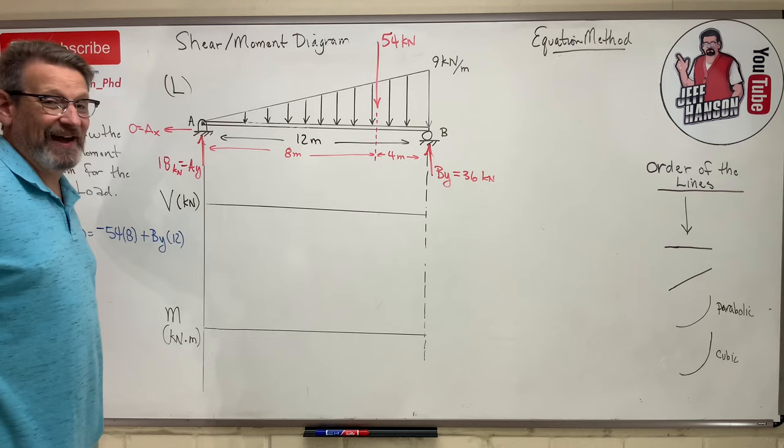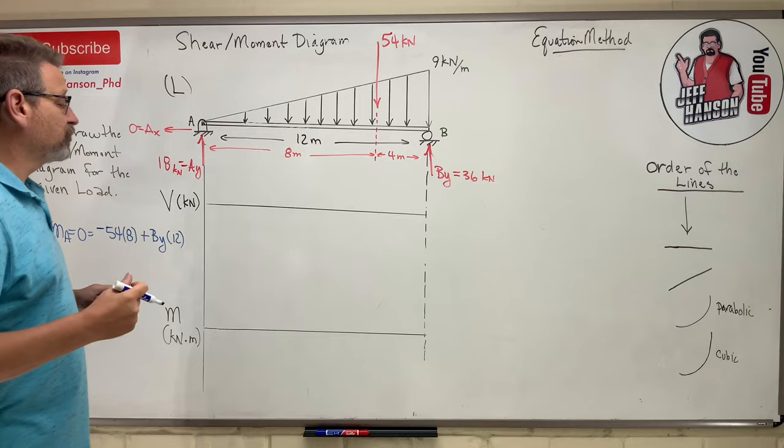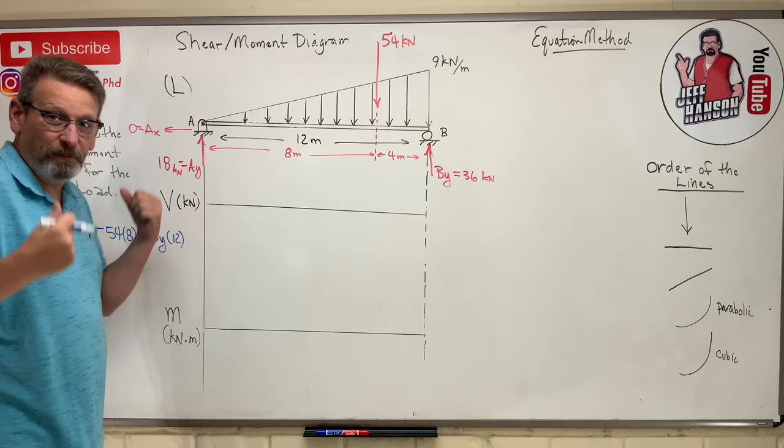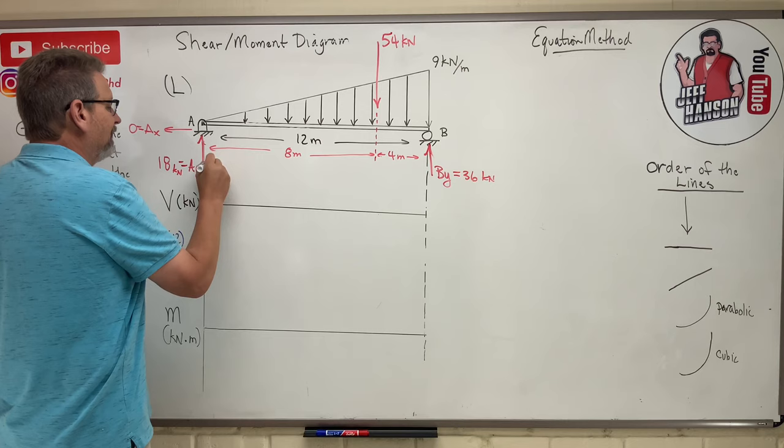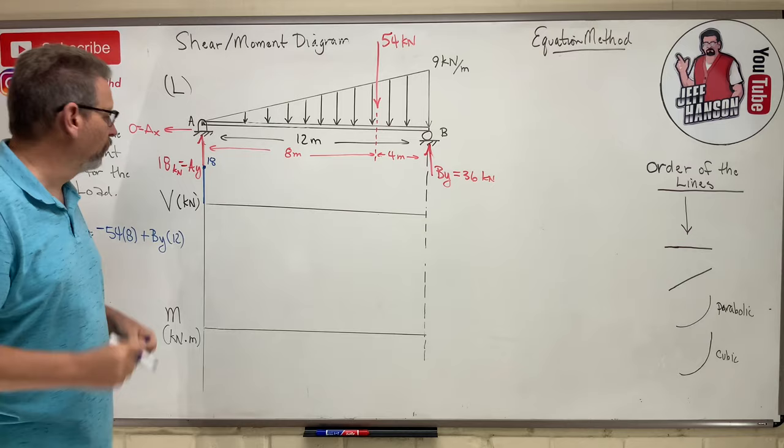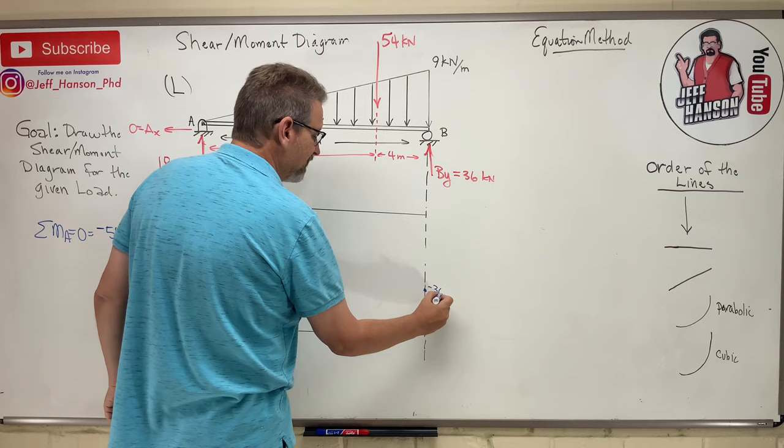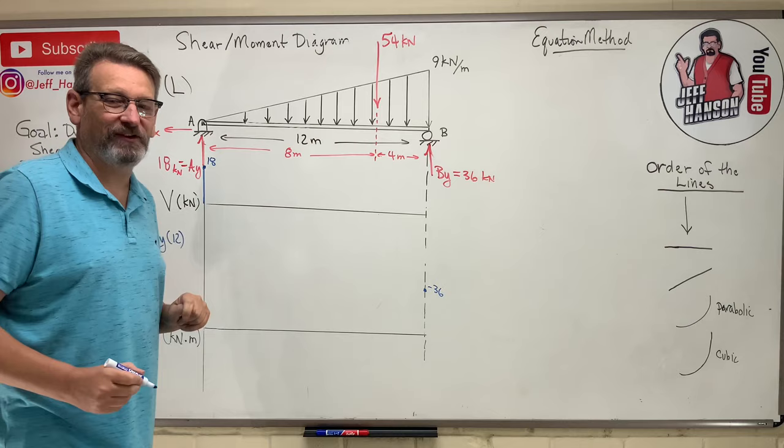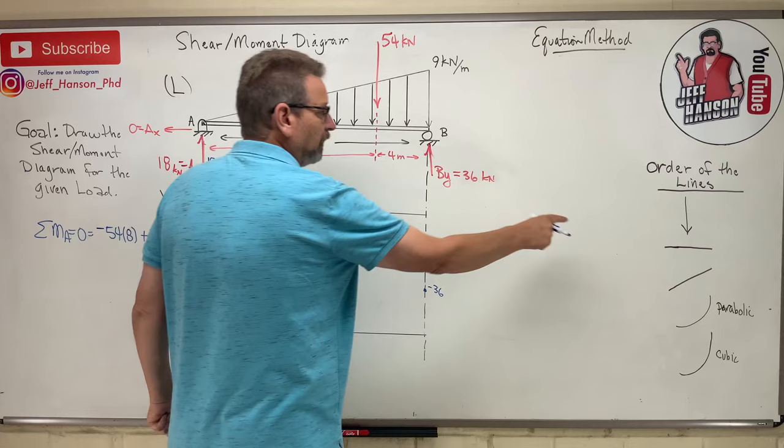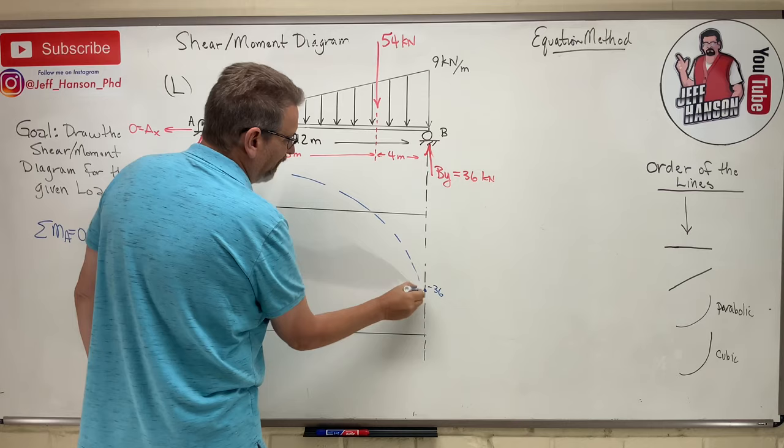So there's our global equilibrium. We are ready to plot this. Remember our load backpack from last time. Our V diagram is going to work exactly like that. We hop on this beam, put on our load backpack, 18 up right off the bat, so boom, there I am at 18. That's a Van Halen force, might as well jump. And then I've got to go down 54, so 18 minus 54 puts me at negative 36. And the question is, how do I get from there to there?